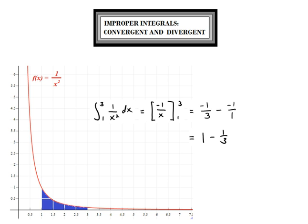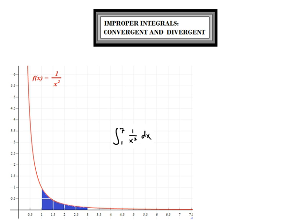If we keep extending the bound of the definite integral to the right, we will accumulate more area. Consider the definite integral from 1 to 7. We're going to add more area, but as you can see, there isn't a whole lot of area that is going to be added. So this result shouldn't be a whole lot more than the definite integral from 1 to 3. The result is 1 minus 1 seventh, following the exact same pattern as the previous two examples.